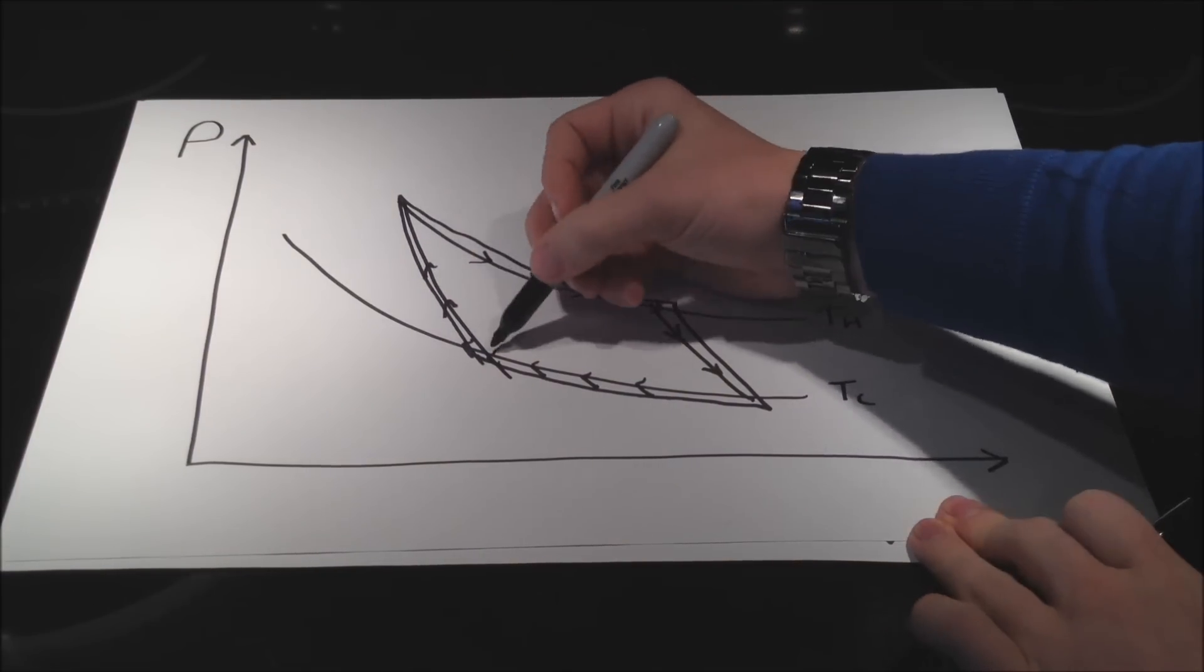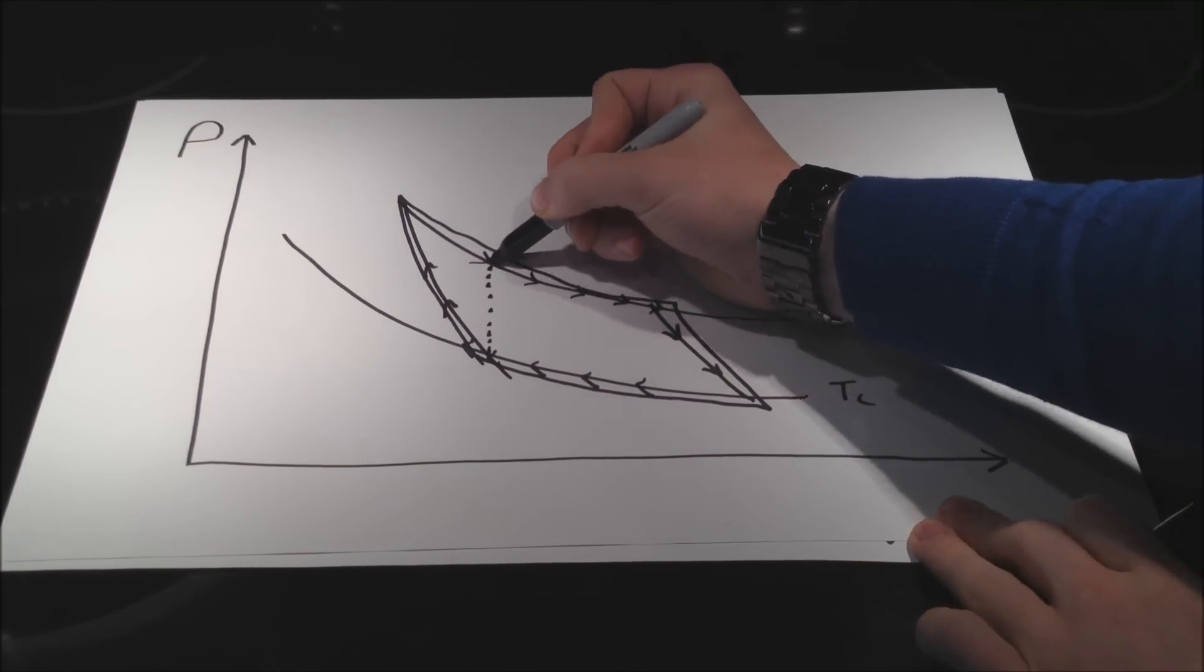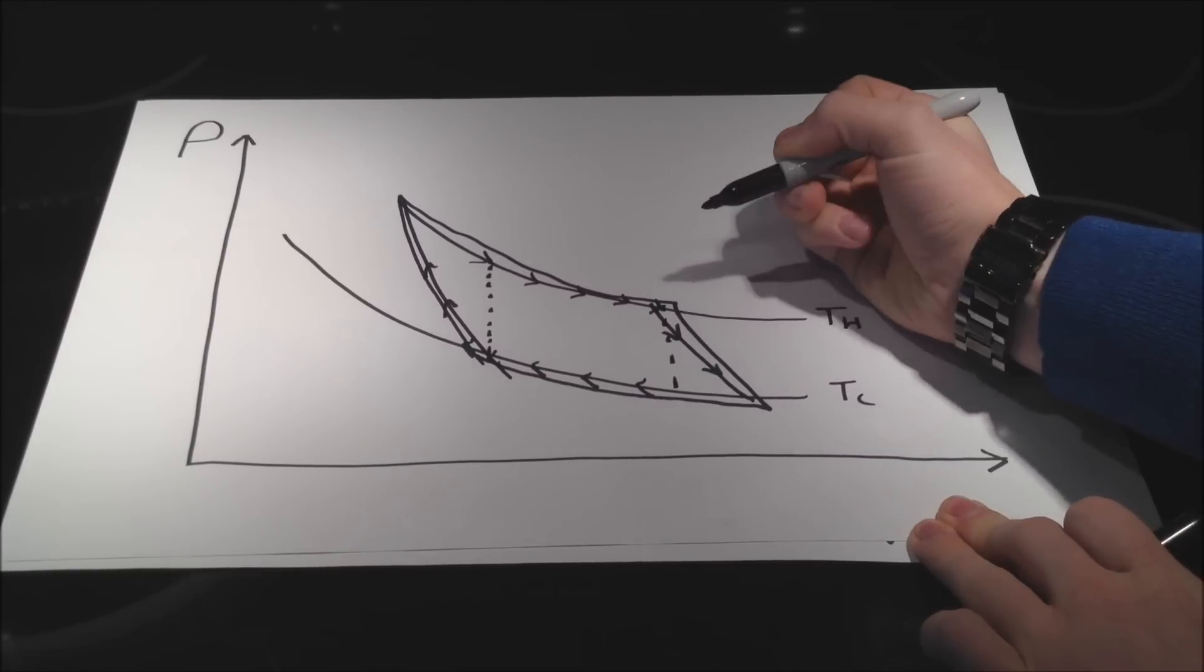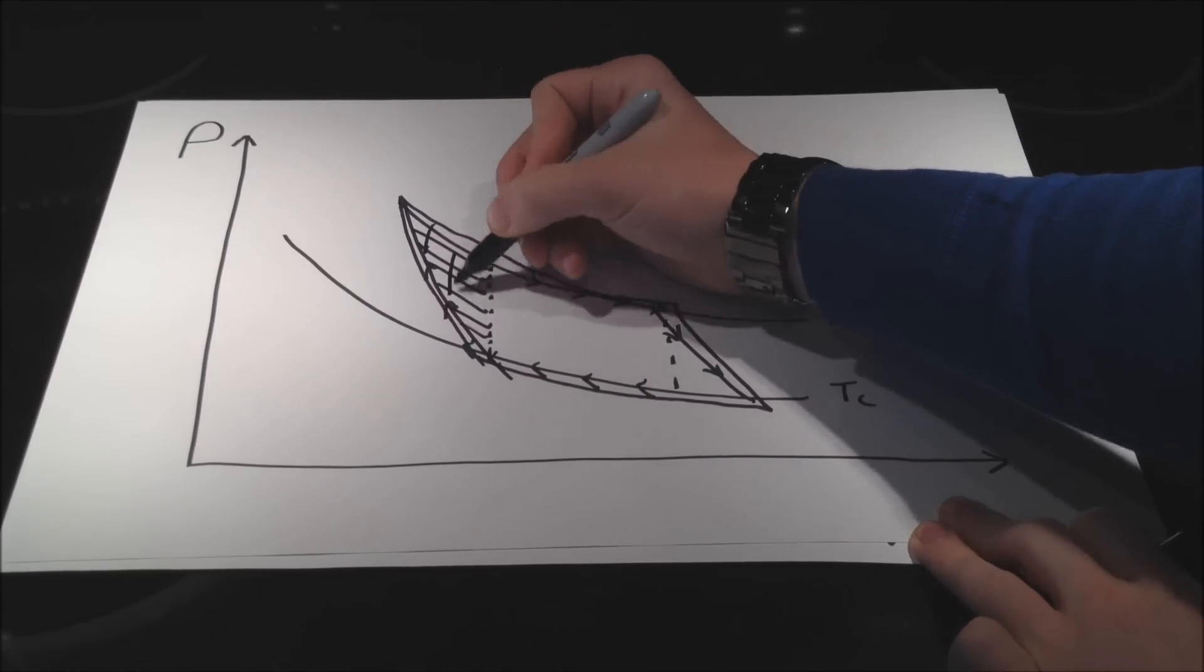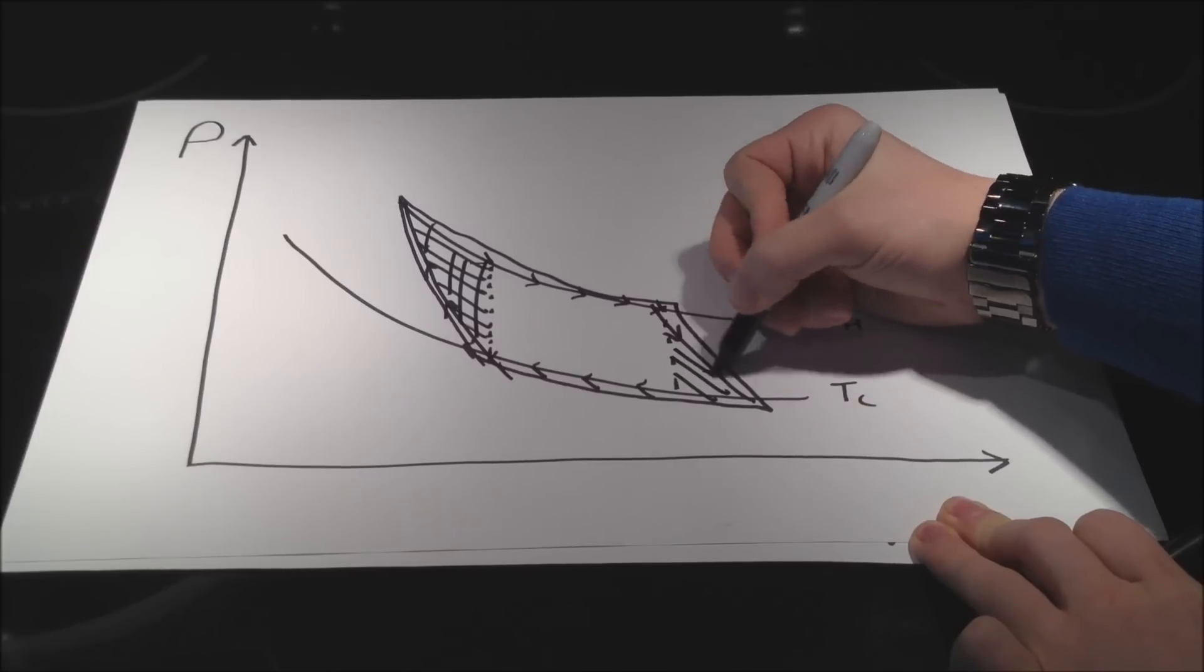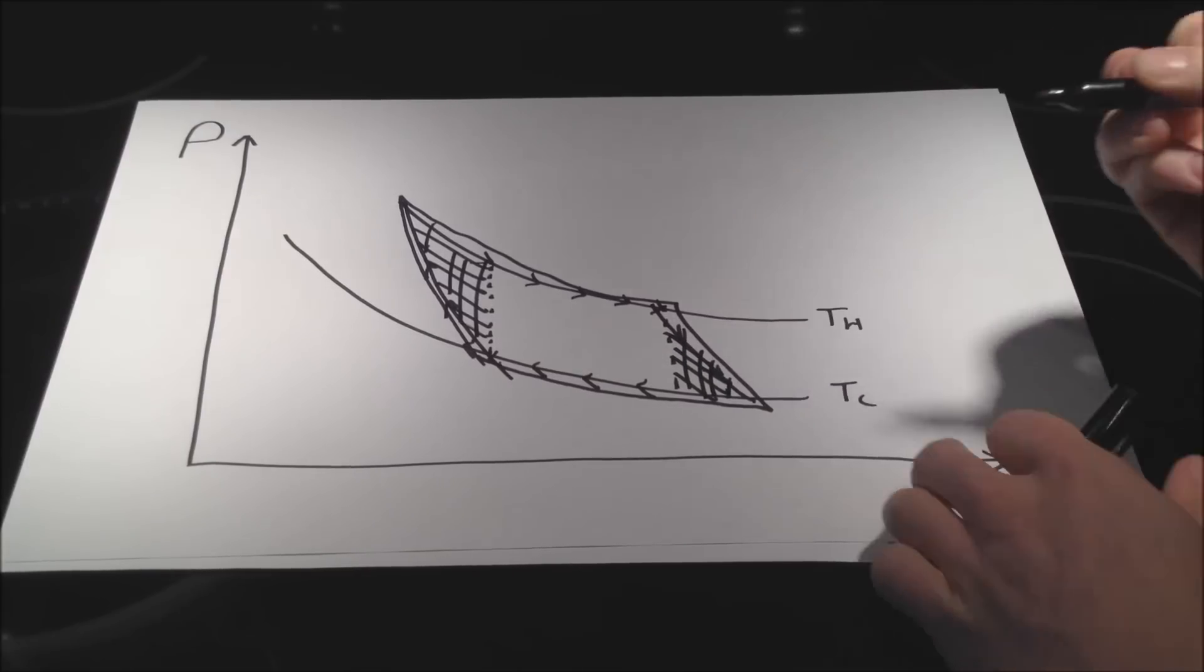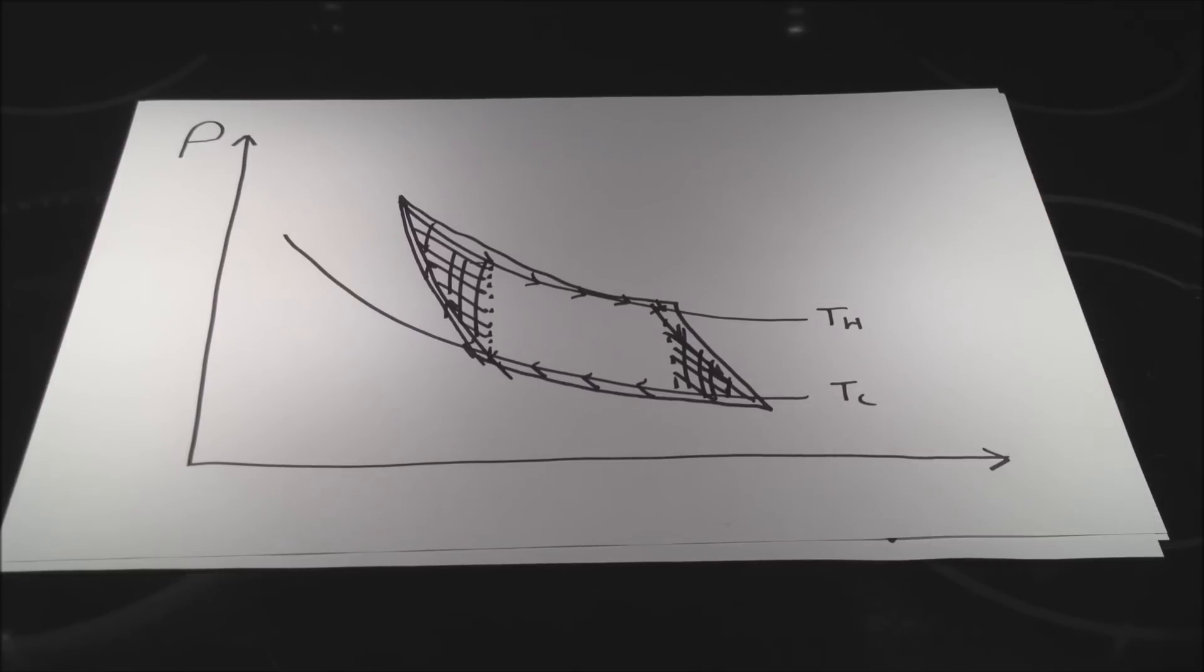Now, if any other process other than an adiabat, say an isochoric process, like so, you'd be losing out on all of this so-called cycle area. And you can see graphically that it's less efficient.